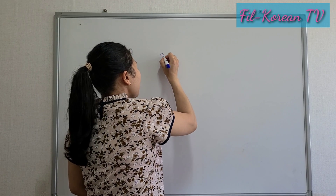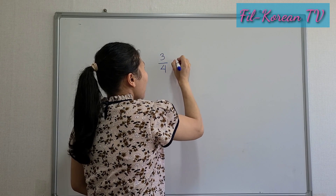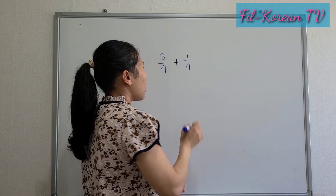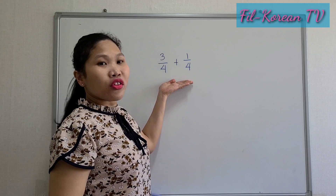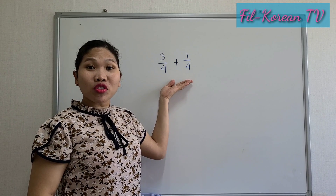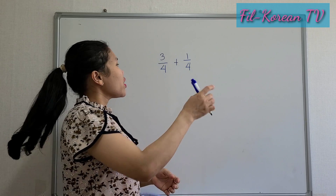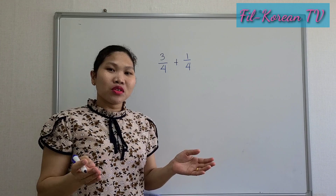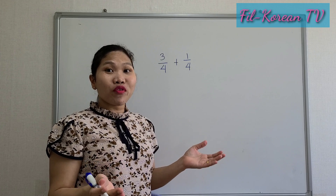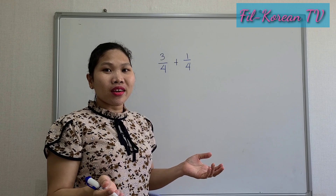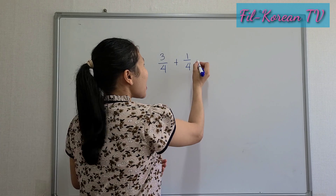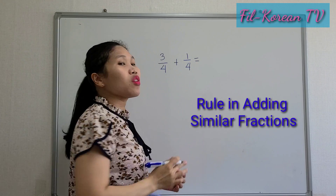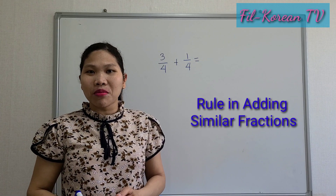Three-fourths plus one-fourth. These fractions are similar fractions because the denominators are the same. So, how to add similar fractions? It is easy — just add the numerators and copy the common denominator.